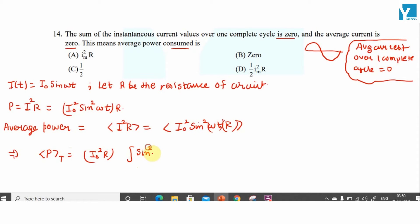Integration of sin²(ωt) dt from 0 to T, divided by T over the complete time period. Here average is a simple formula. So this implies average power over the complete cycle T is equal to I₀²R...